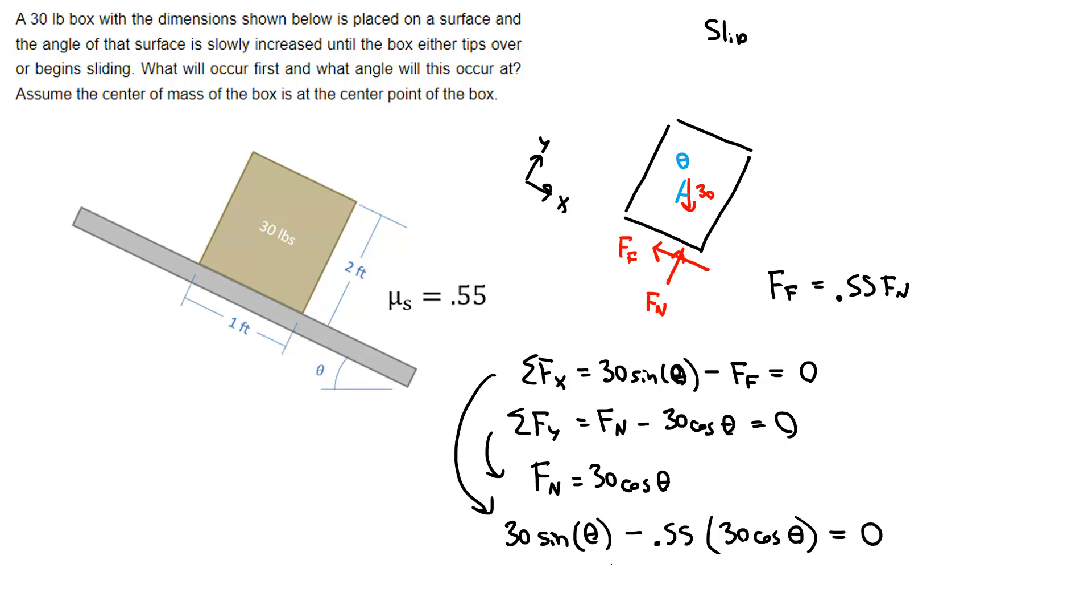Now I've got one equation with only a single unknown. Theta is the only unknown I have here. I should be able to solve for this. I'm just going to need to do some trig identities to make it work.